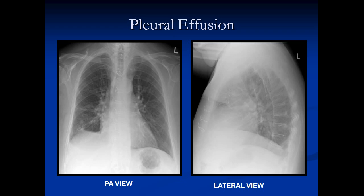Pleural effusions are usually not too difficult to understand. We usually get a little meniscus sign in the corners. Remember that the lateral view has the most dependent portion of the chest. If you're ever going to look for a pleural effusion, look posteriorly first — on the lateral view in the posterior costo-vertebral angle. That's a little meniscus sign on the lateral film.